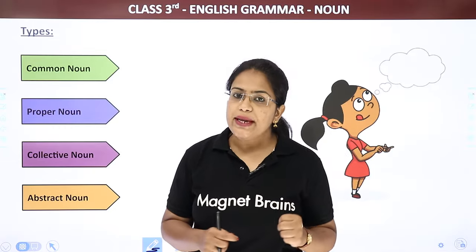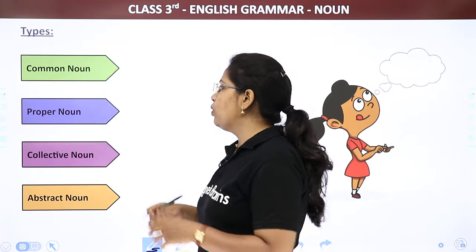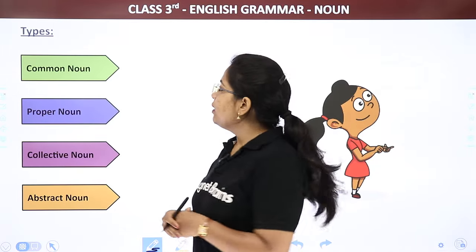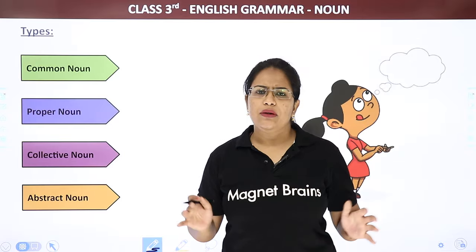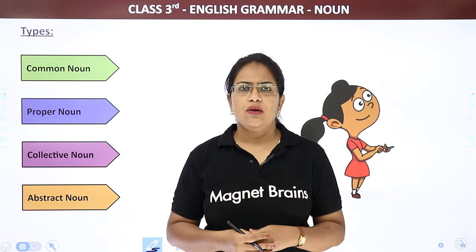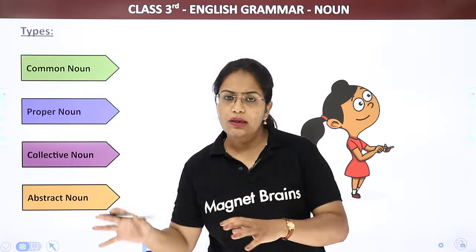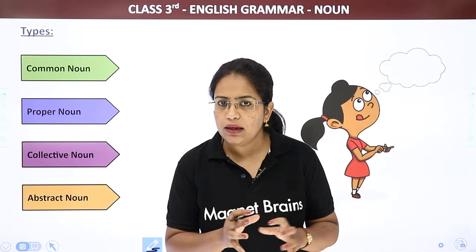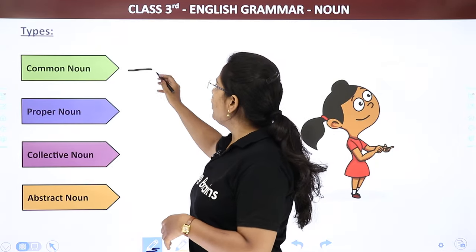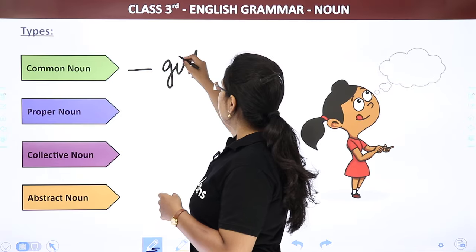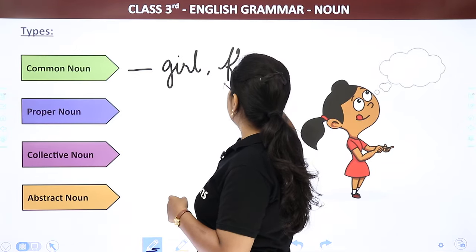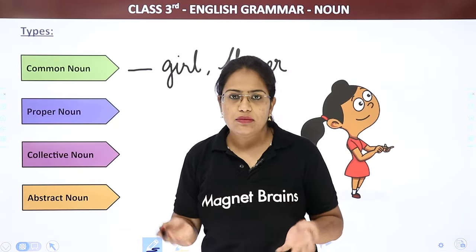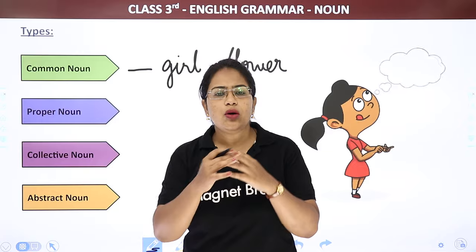What are the four most common types? Common noun, proper noun, collective noun, abstract noun. Now, common noun means — common. Any girl, any boy. When we're talking about a girl or boy, is there a specific girl? No. So common noun means a common group — it can be anything.